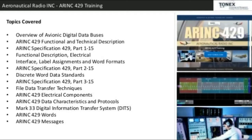Topics covered include: overview of avionic digital data buses, ARINC 429 functional and technical description, ARINC 429 Part 1 functional description, electrical interface, label assignments and word formats, ARINC 429 Part 2 discrete word data standards, ARINC 429 Part 3 file data transfer techniques, ARINC 429 electrical components, data characteristics and protocols, Mark 33 Digital Information Transfer System (DITS), ARINC 429 words, and ARINC 429 messages.